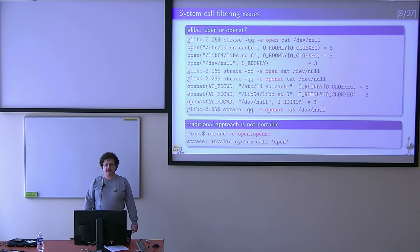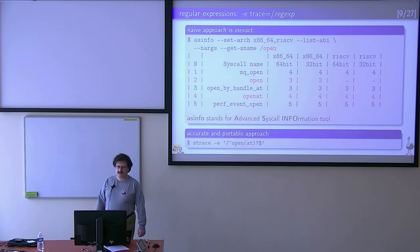So the traditional way to deal with this is just to list two system calls. But as you probably remember, not all architectures know about open syscall. So this traditional approach just doesn't work on these architectures. So if you write a portable script, this is not the right way to go. Because just a simple listing is not portable.